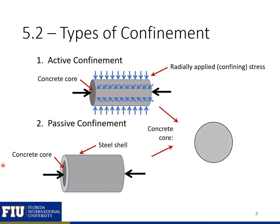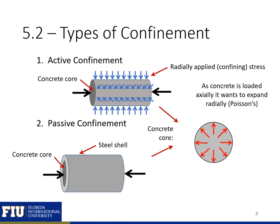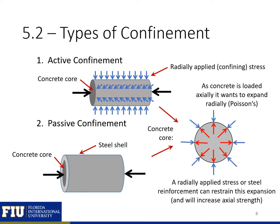Passive confinement is when we have our concrete core and some kind of steel or reinforcement surrounding the core. The concrete core wants to expand as it's loaded — it wants to expand laterally by a Poisson's ratio effect. For active confinement, we'll have a radially applied stress resisting that expansion, while in passive confinement, we'll have a steel shell that's going to resist the expansion. Both of these will provide confinement to our concrete.